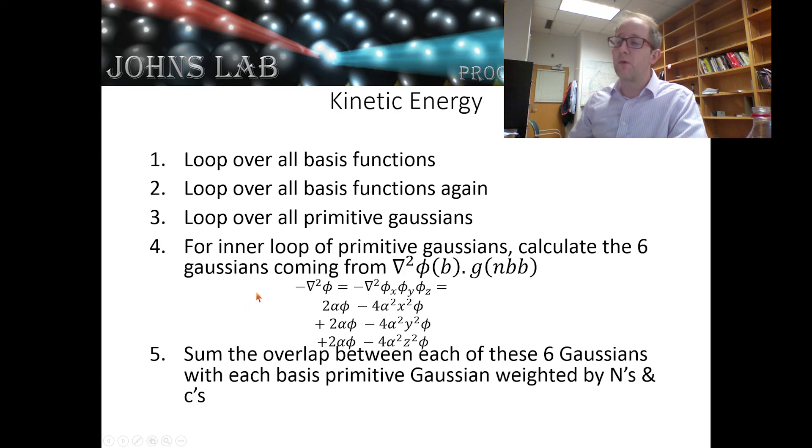Then we'll sum over those multiplied by their contraction coefficients and their normalization constants to get the matrix element T sub ab. That's all we need to do to calculate our overlap and kinetic energy matrices.